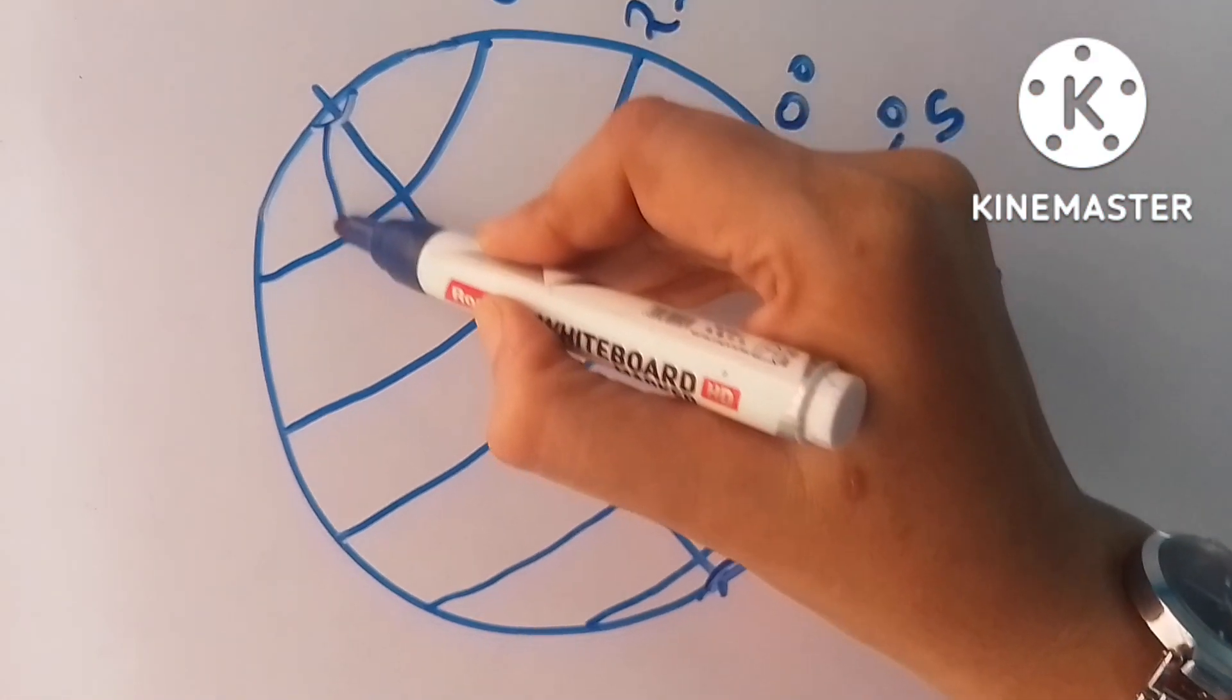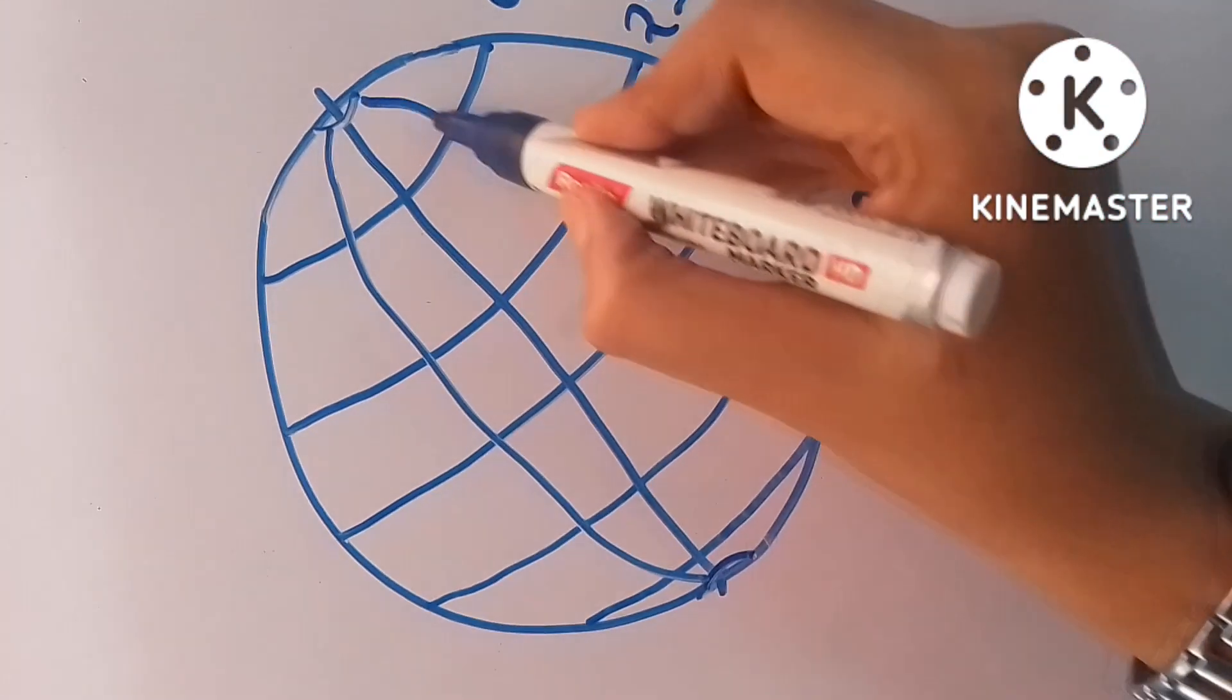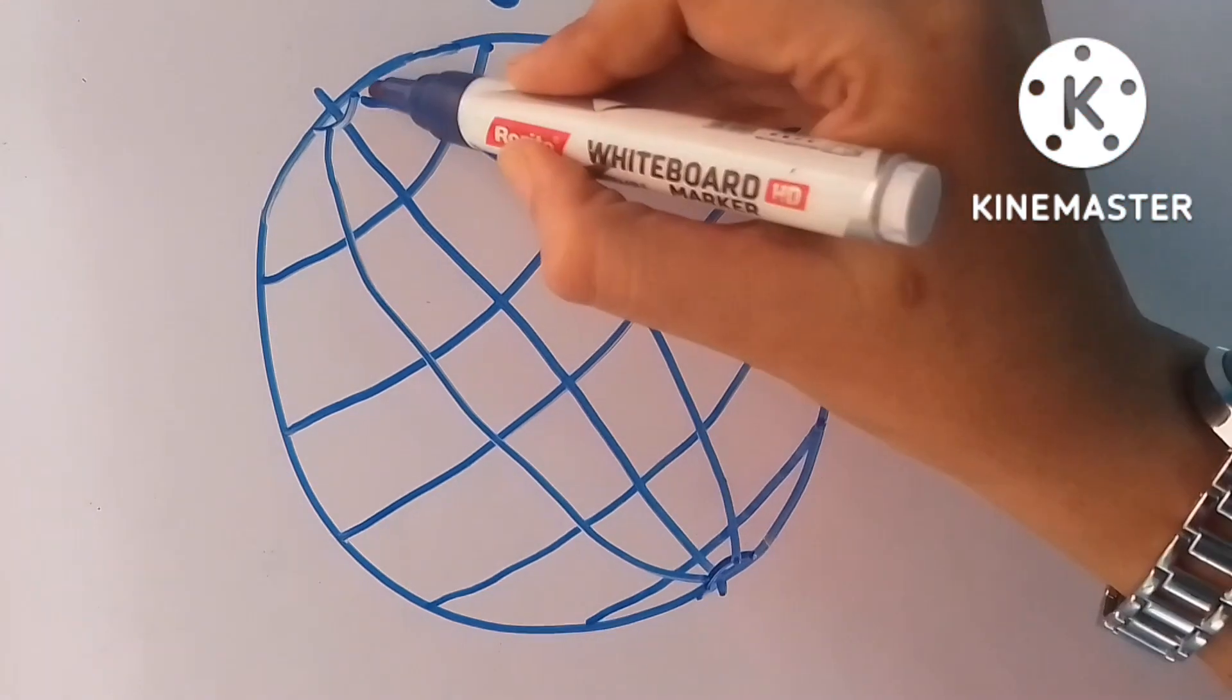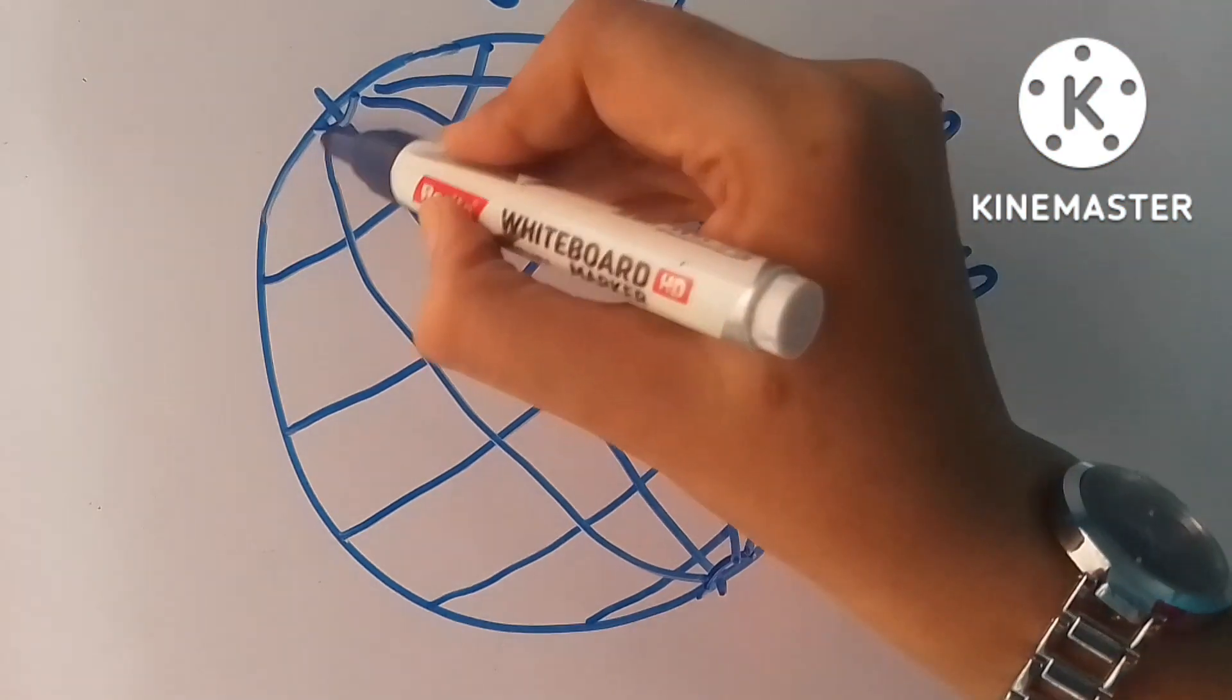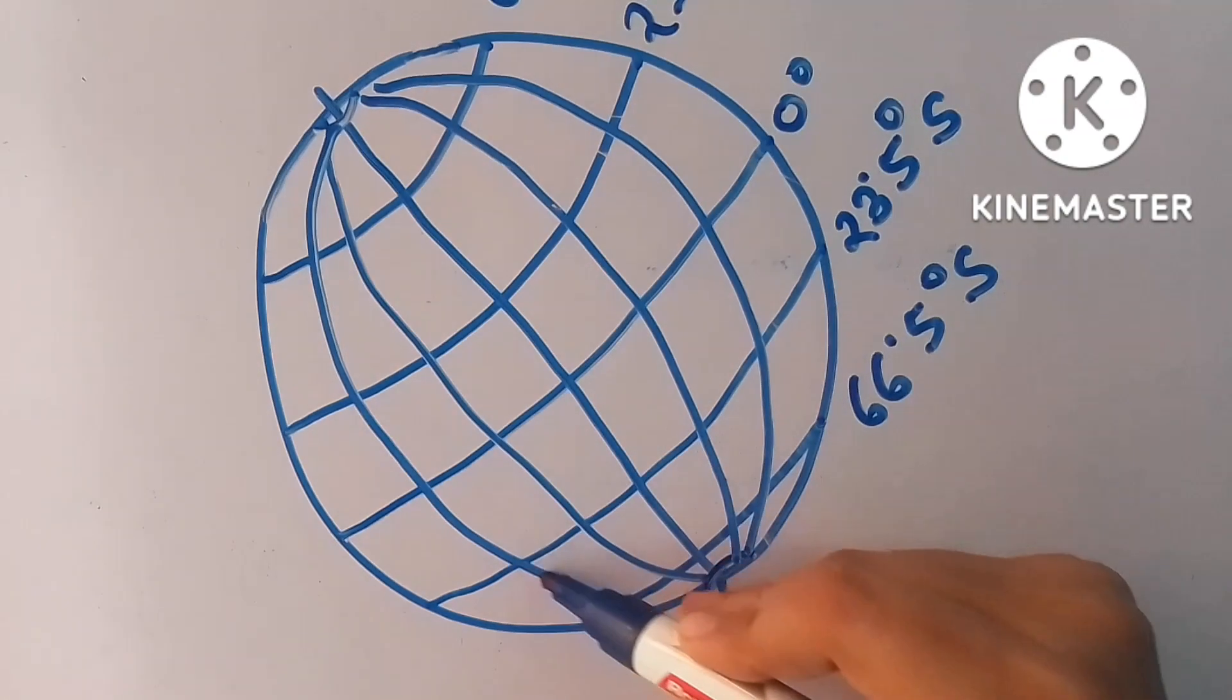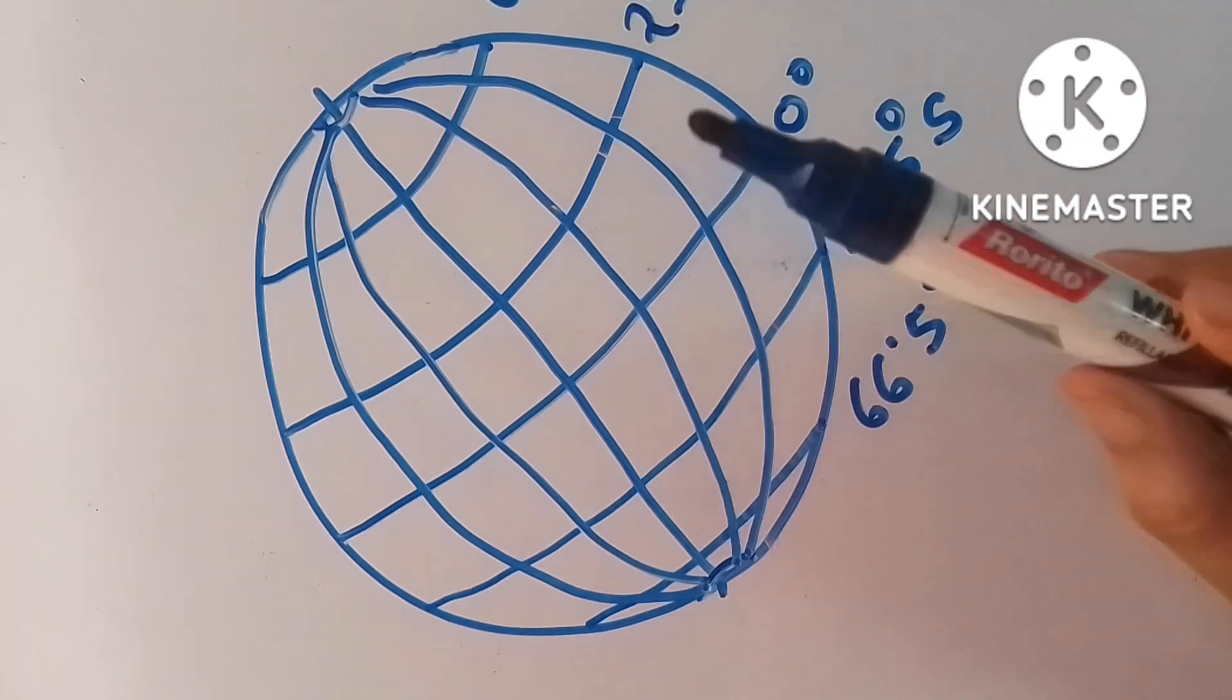Latitude and longitude make up the grid system that helps us identify absolute or exact location of any place on the earth's surface. We can use latitude and longitude to identify specific locations of any place. Latitude and longitude are also helpful in identifying landmarks.